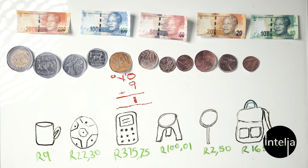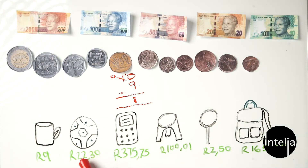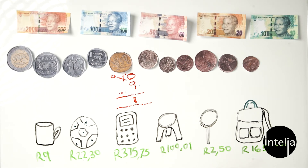Now let's move on to the calculator. This is a bigger price — the calculator is 375 rand 75 cents. Remember, 100 cents is equal to 1 rand. You can only have up to 99 cents after the decimal point; once it reaches 100 cents it becomes a whole rand.